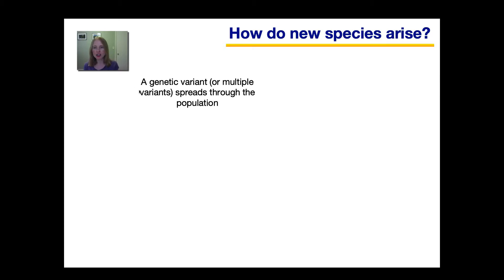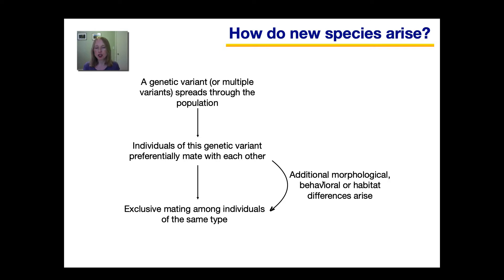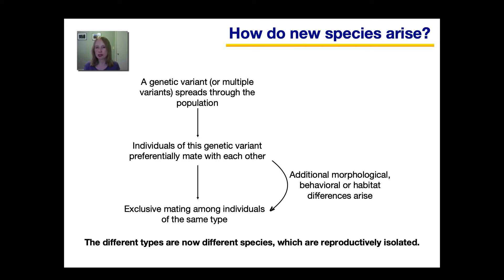It begins with a genetic variant, or sometimes multiple variants, spreading through the population over time. Individuals that belong to this genetic variant may preferentially mate with each other. As this goes on over a long period of time, eventually you may see additional morphological, behavioral, or habitat differences that arise. Eventually this leads to exclusive mating among individuals of the same type. Once these genetic variants are exclusively mating just with each other, they are now considered a different species — the different types are now different species which are reproductively isolated.